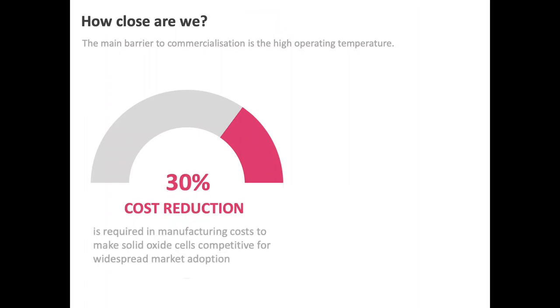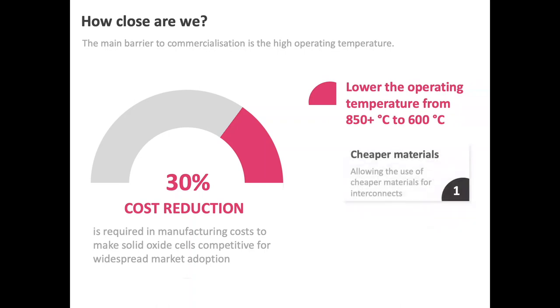How close are we to fully embrace this technology? It is estimated that a 30% reduction in manufacturing costs is required to make solid oxide cells commercially competitive. Therefore, one central theme in the solid oxide development is to lower the operating temperature of the solid oxide cells. The lower operating temperature results in two key advantages. First, it allows for lower cost materials to be used for manufacture. Second, it allows for more cost-efficient stack and system design, which requires less energy for operation.